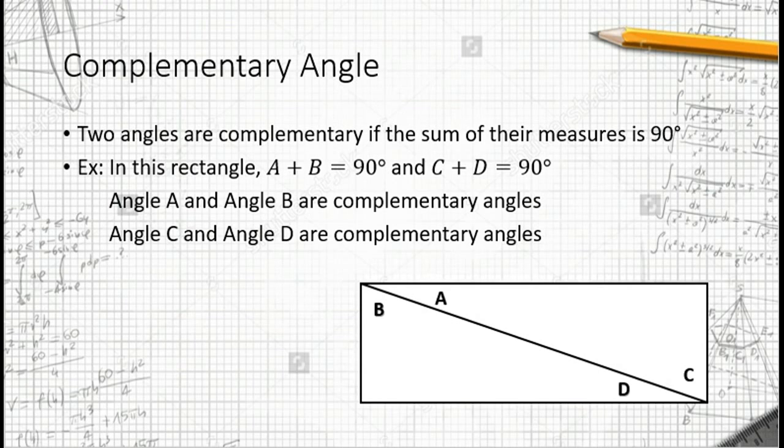The first vocab we are going to learn is complementary angle. Two angles are complementary if the sum of their measures is 90 degrees.